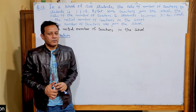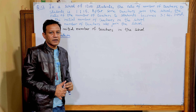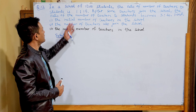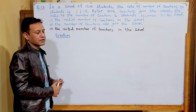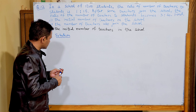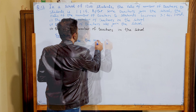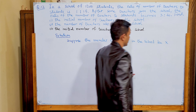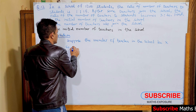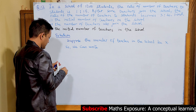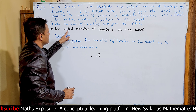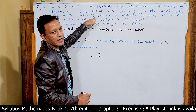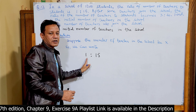Let's solve Part 1: the initial number of teachers in the school. The number of students is 1200. The ratio of teachers to students is 1:15, meaning if there is 1 teacher for every 15 students. We need to find the initial number of teachers.